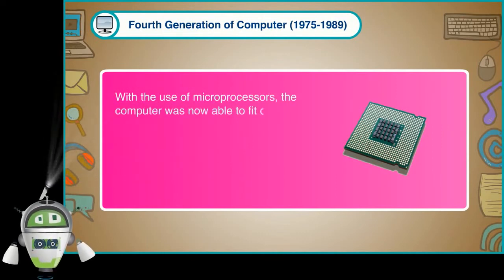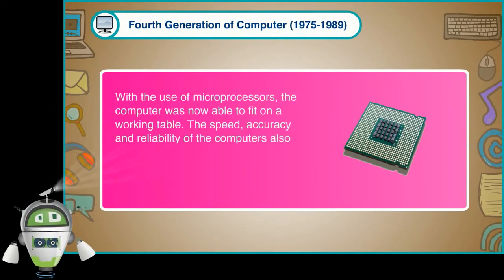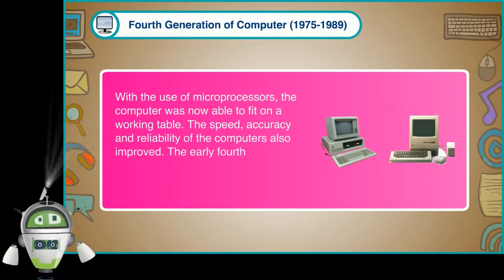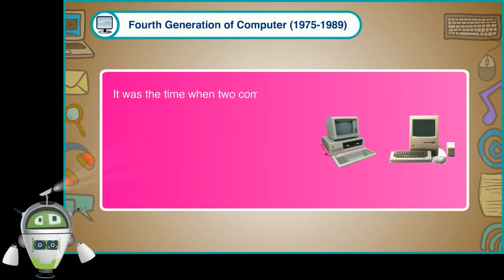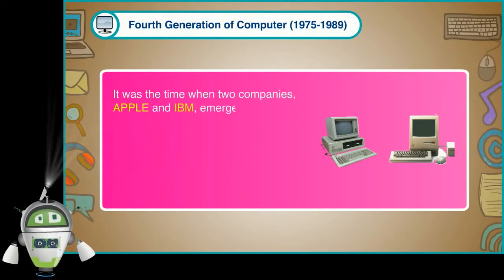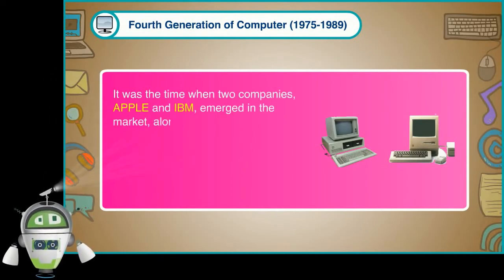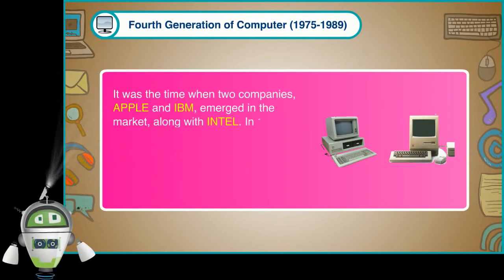With the use of microprocessors, the computer was now able to fit on a working table. The speed, accuracy, and reliability of the computers also improved. The early fourth generation computers were Kenbak and MITS Altair. It was the time when two companies, Apple and IBM, emerged in the market, along with Intel.